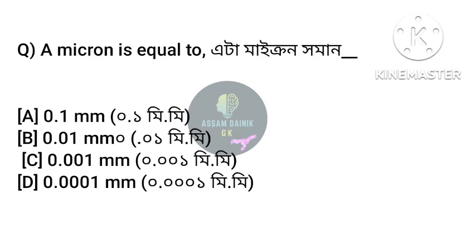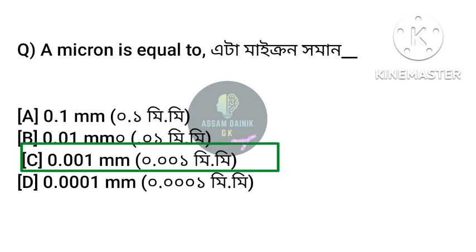A micron is equal to what? Answer: Option C, 0.001 mm. One micron equals 0.001 mm.